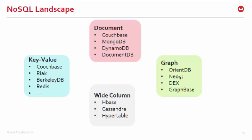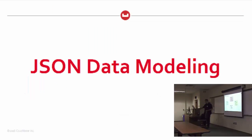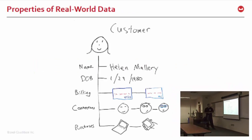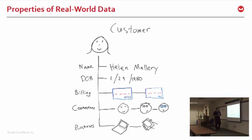I'm going to mainly focus on document databases and use Couchbase as my example. There are lots of players there: Amazon DynamoDB is a big one, Microsoft has DocumentDB — both cloud-based document databases. I want to start by talking about data modeling in JSON. I'll start with a use case that I drew myself, as you can tell.